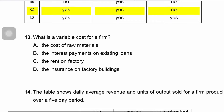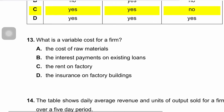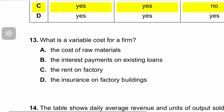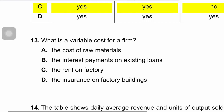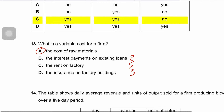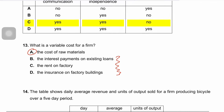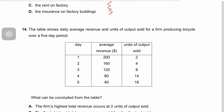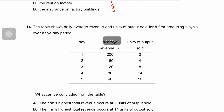Question thirteen: what is the variable cost of production for a firm? The cost of raw materials is a variable cost of production. All other listed options are fixed costs. This is a simple, easy one-mark question.